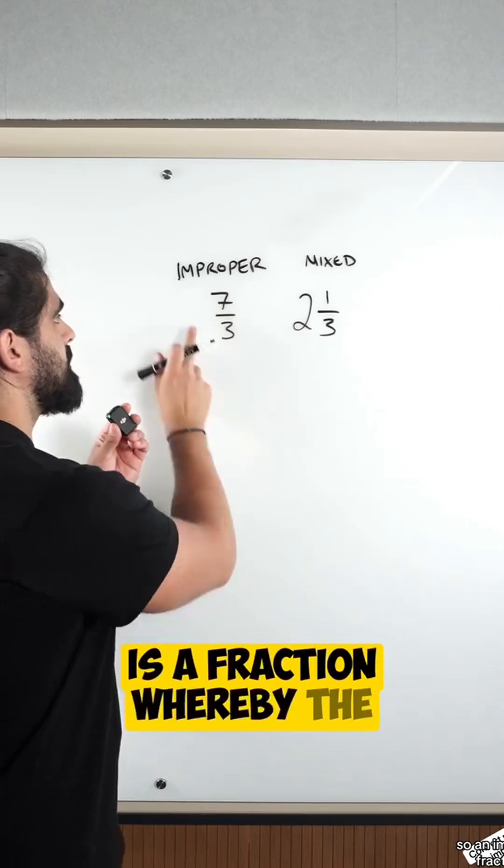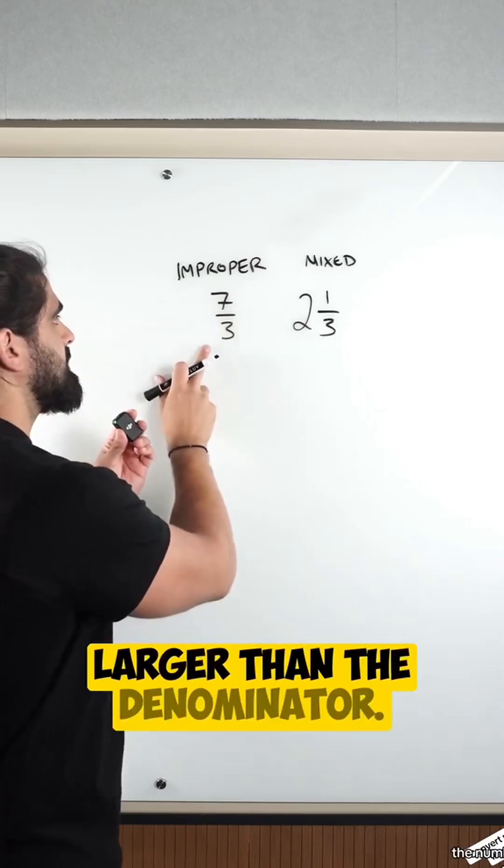So an improper fraction is a fraction whereby the numerator, the number, is larger than the denominator.